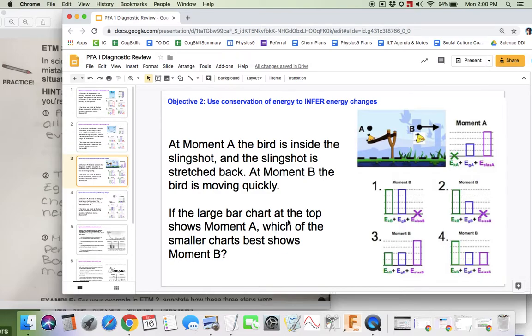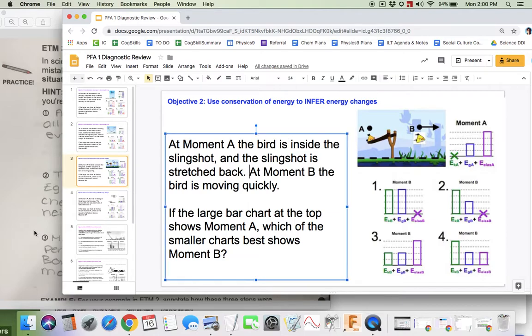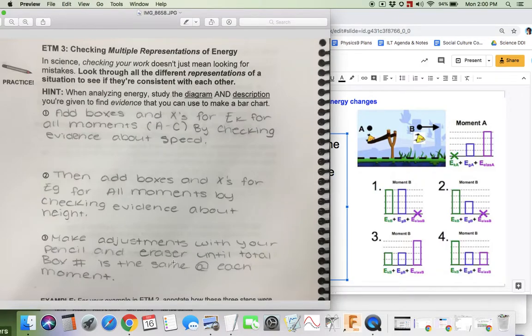We do have some evidence here, so we'll read the description anyway. At moment A, the bird is inside the slingshot, and the slingshot is stretched back. At moment B, the bird is moving quickly. We have some evidence about motion. We don't have that much evidence about height. So I do know that this slingshot is relevant. There's some evidence that it's storing elastic energy because it's pulled back. But what I really want to focus on, in addition to the evidence, is this total box number idea.